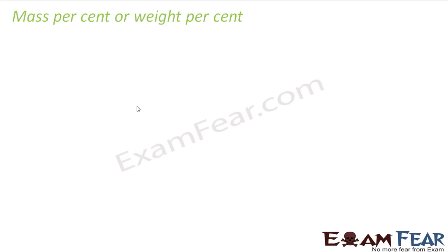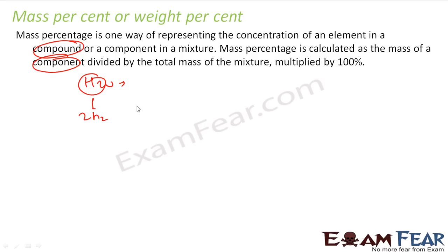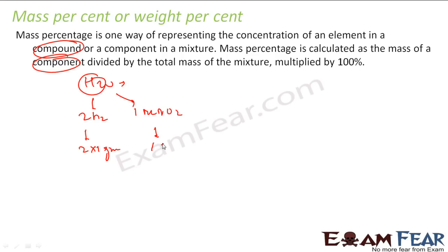The first way is mass percent or weight percent. Mass percent is one way of representing the concentration of an element in a compound or a mixture, and it is calculated as the mass of the component divided by total mass of the mixture. For example, if you take the water molecule H₂O, it has 2 moles of hydrogen and 1 mole of oxygen.